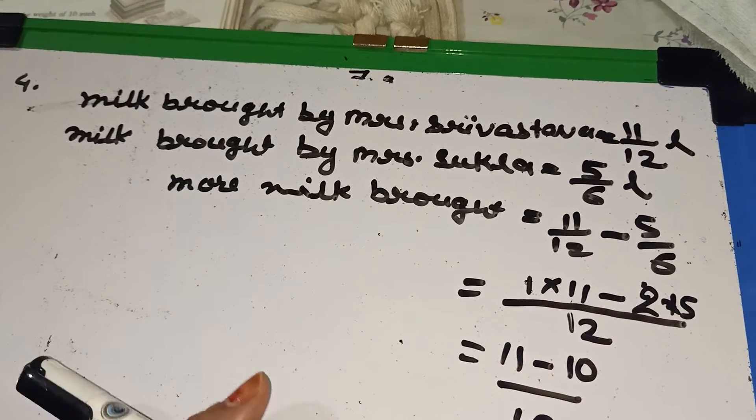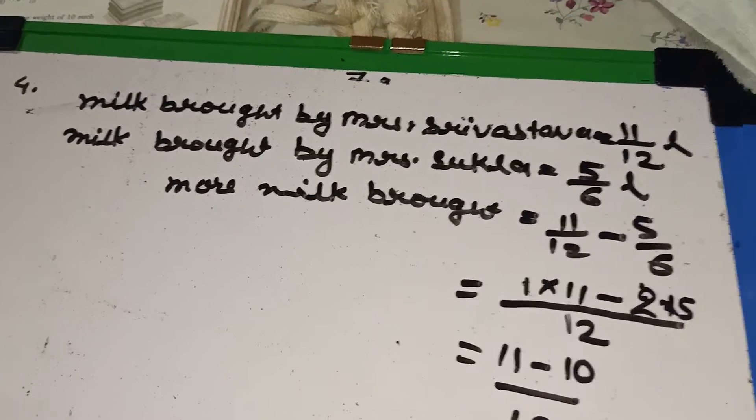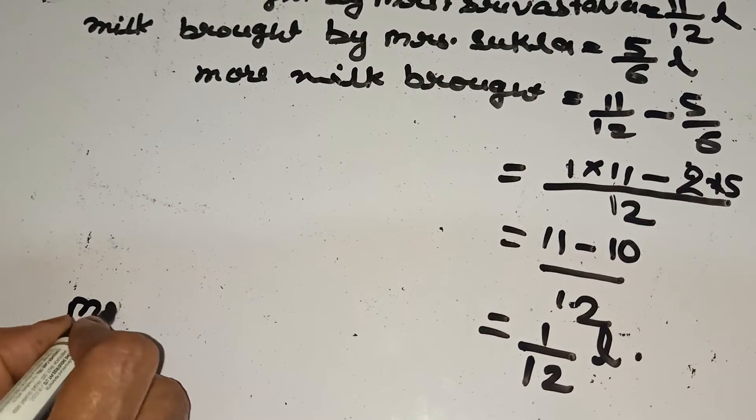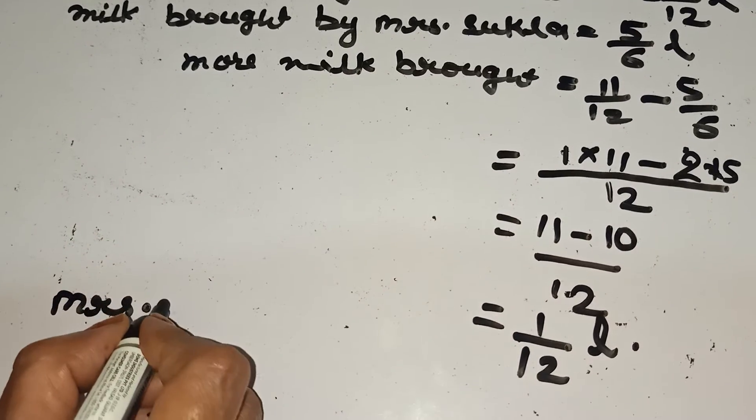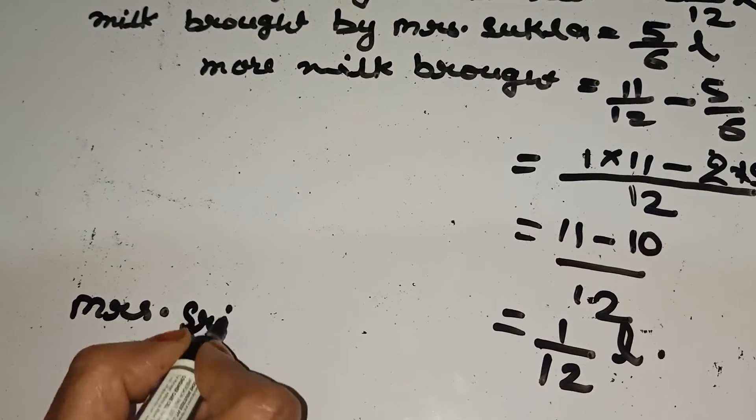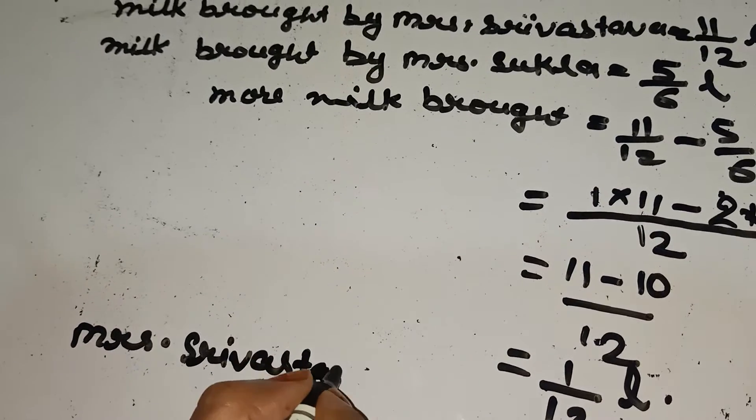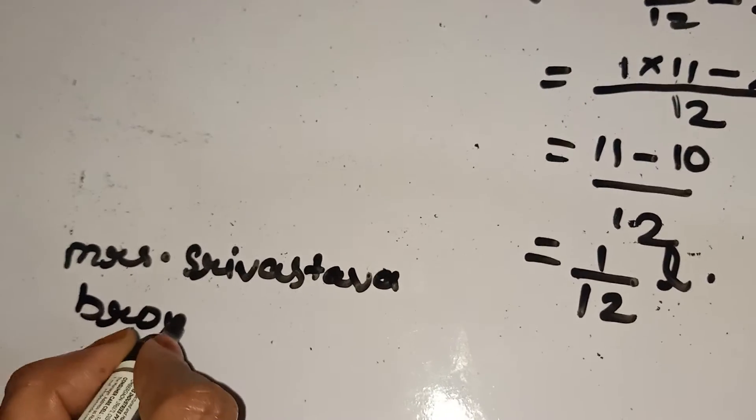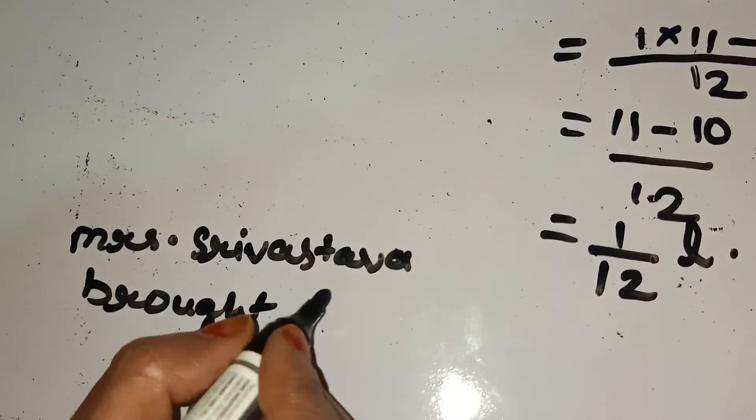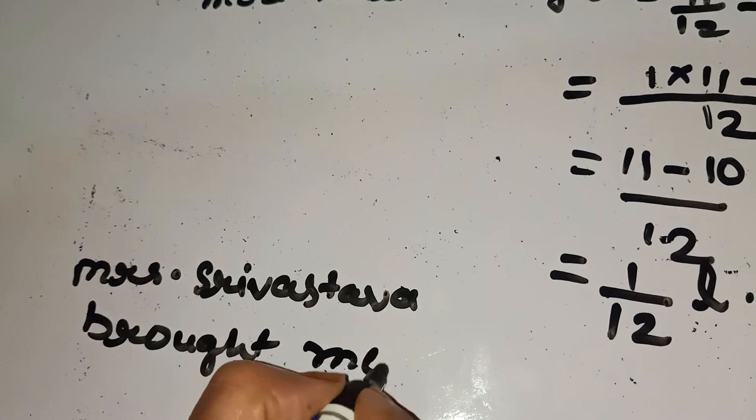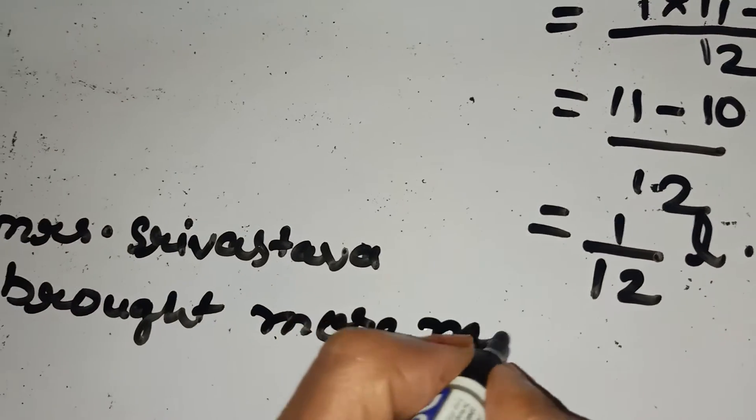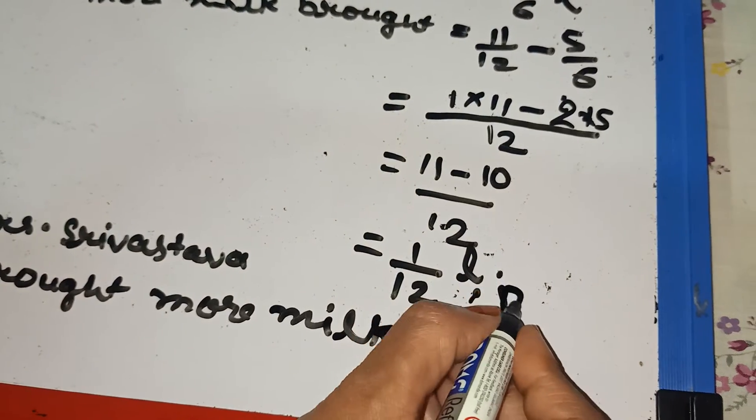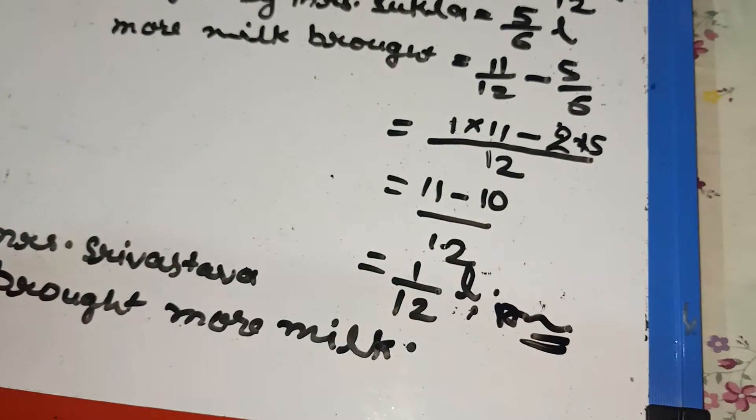11 minus 10 by 12 is equal to 1 by 12 litre. So how much is 1 by 12 and who bought more milk? Answer is Mrs. Srivastava bought more milk.